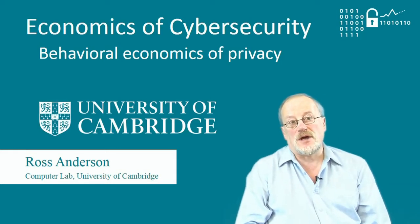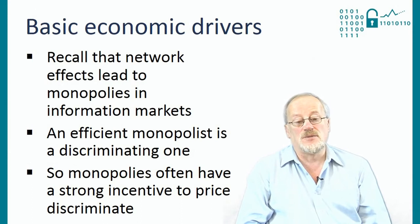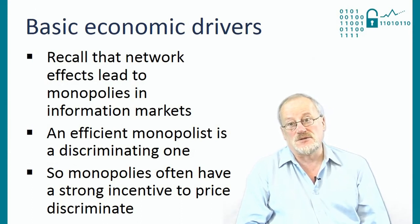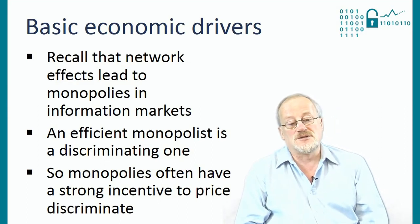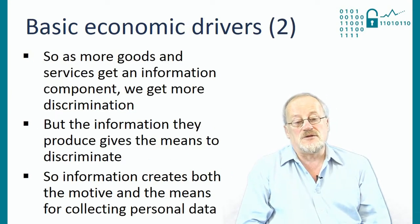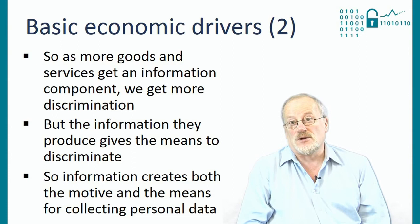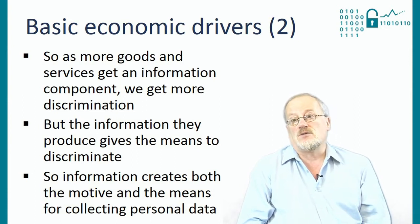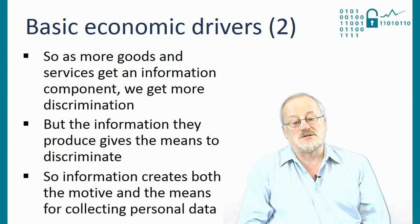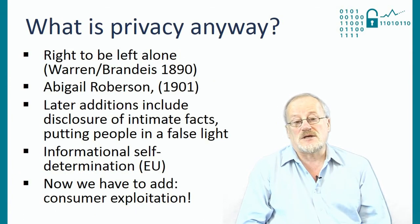In this segment I'm going to talk about the economics of privacy, and in particular the behavioural economics. Network effects lead to monopolies in information markets and in markets for goods and services that have an information component. An efficient monopolist is a discriminating one, so monopolies often have a very strong incentive to price discriminate. As more goods get an information component, we're going to get more and more discrimination, and modern technology gives both the motive and the means for collecting personal data at the same time.